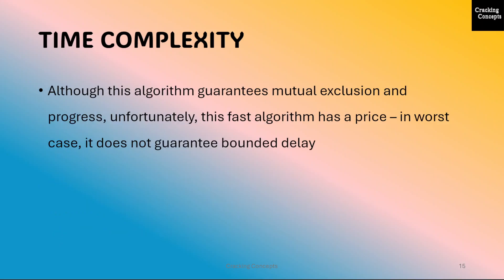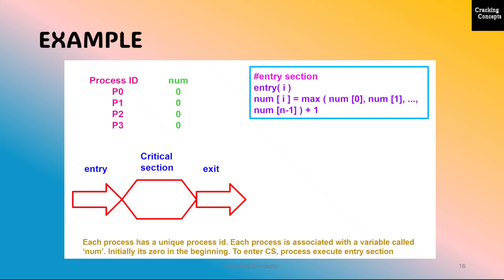Although this algorithm guarantees mutual exclusion and progress, unfortunately this fast algorithm has a price: in the worst case it does not guarantee bounded delay. Now we will see an explanation of the bakery algorithm with an example. Here we have processes p0 to p3.